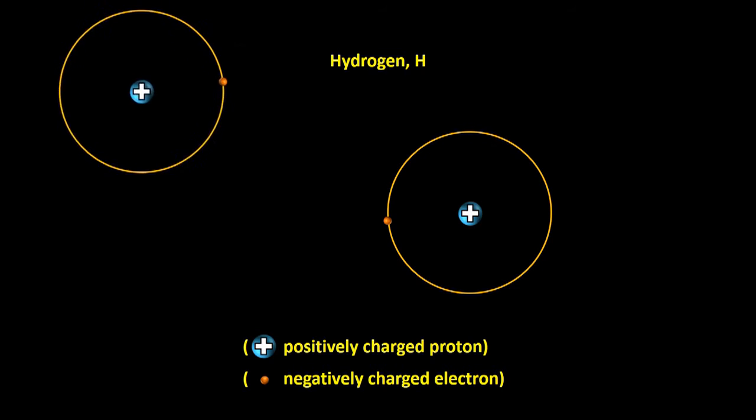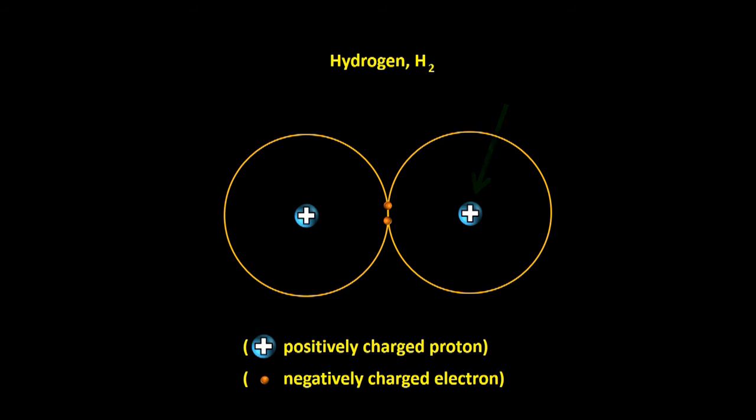If a second H atom happens to come along and it bumps into our first H atom, then our original proton will also attract the electron of the second H atom. Now that also means that the proton of our second H atom is close enough to attract the electron of the first H atom.